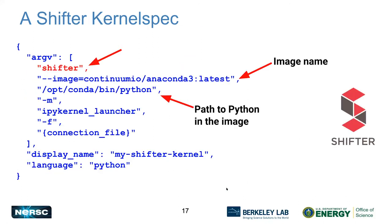Another cool thing you can do is put a Python environment inside a Docker container and run that as a kernel. Using Shifter — which will be covered later — this is how you'd take a Docker container and run it as a Python kernel. This is really handy if you have a collaboration where everybody agrees to use the same Docker container for their Python work — whatever command you would run on the command line, you stick it in the kernel spec.